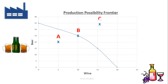Points above and to the right of the curve, such as point C, represent combinations that cannot be reached unless a new technology is discovered making the firm more productive, resulting in a shift to the right of the PPF — and usually with time we will have this shift. The firm also can choose points such as D, where it produces only beer and no wine, or point E, where it produces only wine without producing beer.